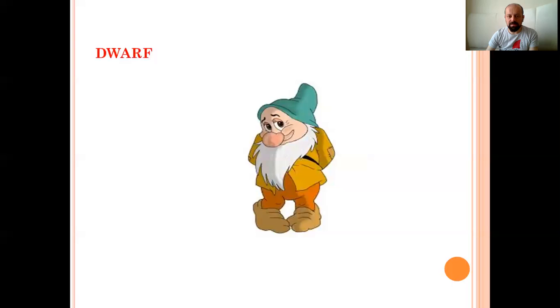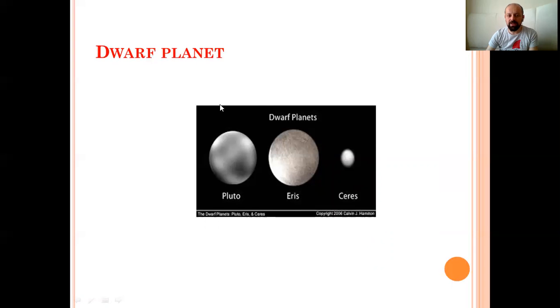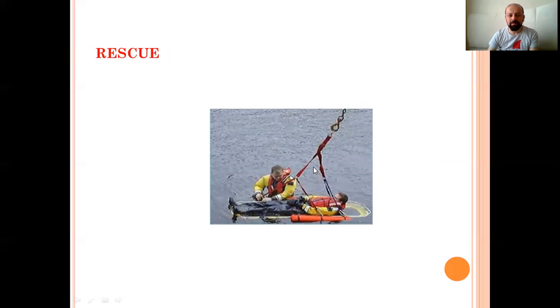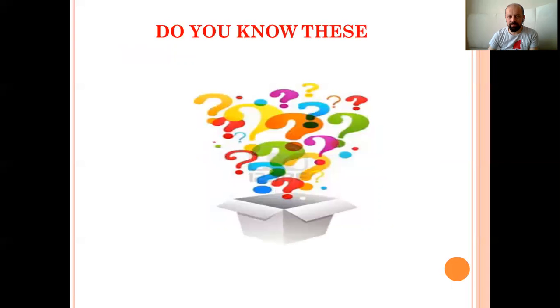Dwarf. Yes. You can see here. Dwarf. Cüce anlamına geliyor. Pamuk prenses ve yedi cücelerde de kullanmıştık. Dwarf. Dwarf planet. Cüce gezegen. Normalde aslında gezegen büyüklüğünde olmayan fakat gezegen özelliği sağlayan küçük gezegenlere Dwarf planet ismini veriyoruz. Observe. Observe. Araştırma. Gözlem yapma. Gözlem. Observe. Burada da yıldızları ya da gezegenleri gözlem yapıyorlar. Rescue. Yes. Kurtarmak in Turkish meaning. Okay. Rescue.